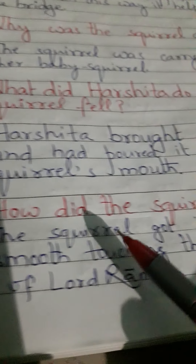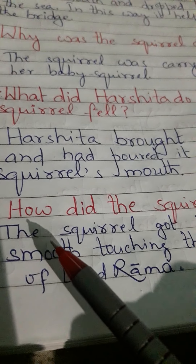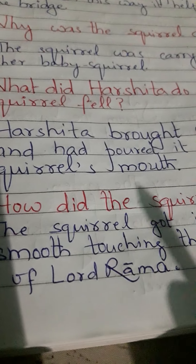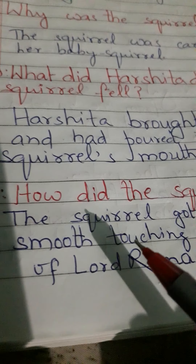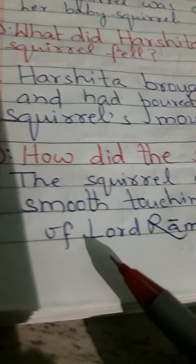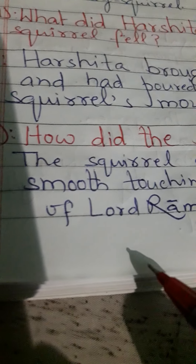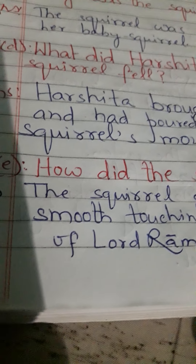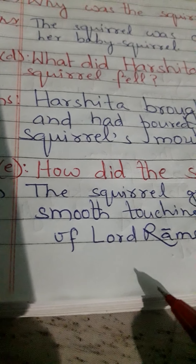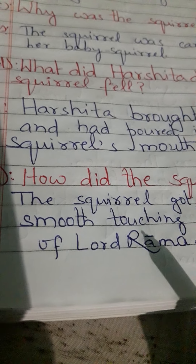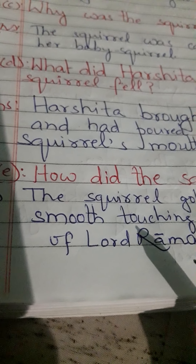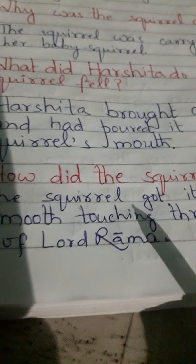Question 1e: How did the squirrel get its stripes? Gilaheri ko stripes kaise bane, yani jo usme dhariyaan thi uske sharir mein, wo kaise bane? Answer: The squirrel got its stripes after smooth touching through the divine fingers of Lord Ram.